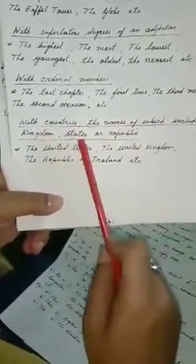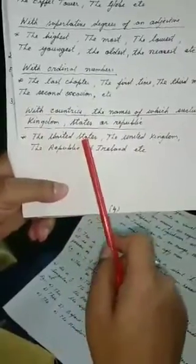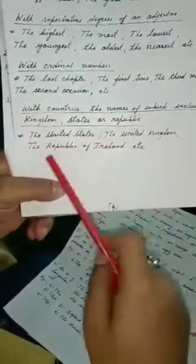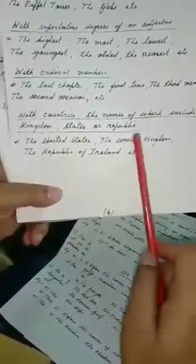With countries and names of which include kingdom, states, or republic. In front of that also use the United States, the United Kingdom, the Republic of Ireland. So in place before this you have to put THE.